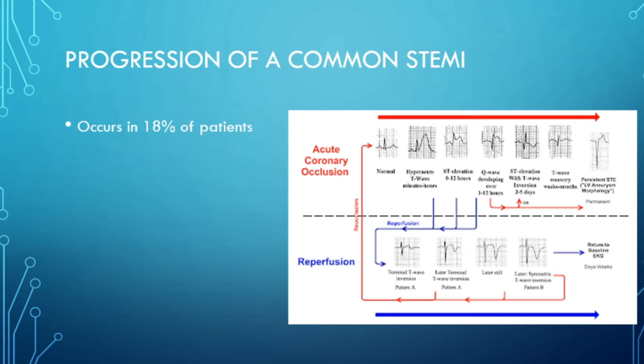An occlusion MI will have subtle EKG changes and will not meet STEMI criteria. Most hospital physicians do not recognize these, and when a patient sits in the ER infarcting for hours, the second troponin comes back positive and they rush to the cath lab. Time is organs. In one study, an occlusion MI happens in about 18% of patients. The first step in the flowchart is hyper-acute T waves, so let's recognize them early.